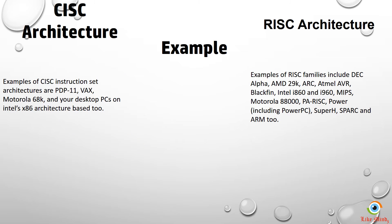To give examples for each, all Intel's x86 processors are CISC based. Going to RISC architecture, we have PowerPC, we have SPARC, we have ARM, we have AMD 29K, Arc, and so on. In fact, we have quite a few for the RISC architecture.